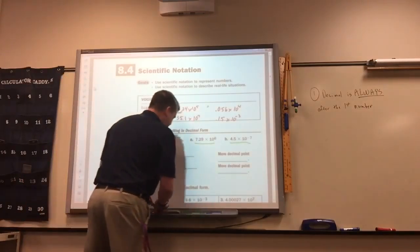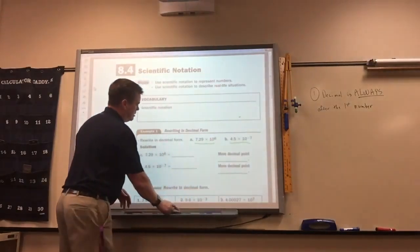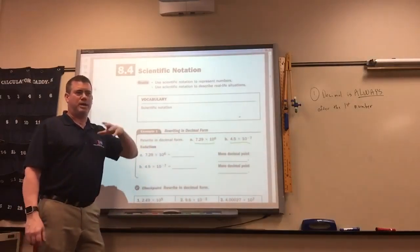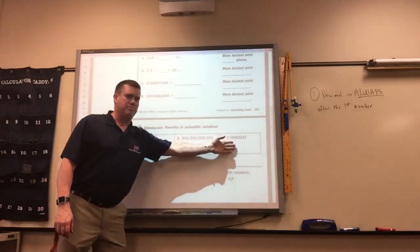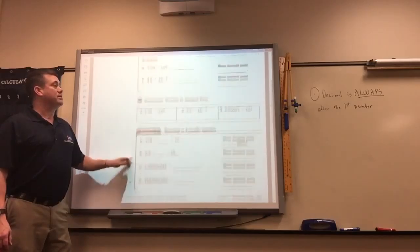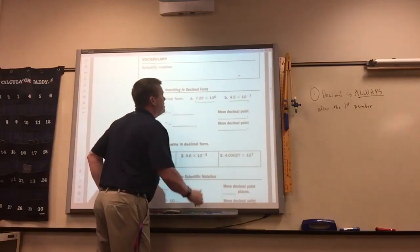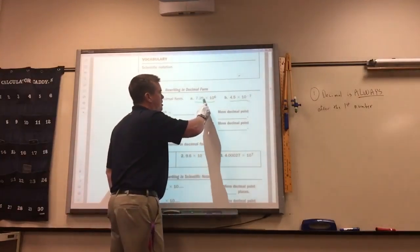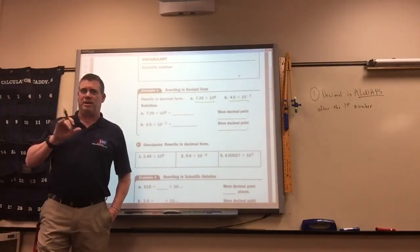So all we're doing today is converting scientific notation into decimal form, which is just writing a normal, and then converting numbers into scientific notation. So all it is, is just moving the decimal. For this one, you can do this on a calculator. 7.29 times 10 to the sixth, press equals, but your calculator might not be big enough to display everything.